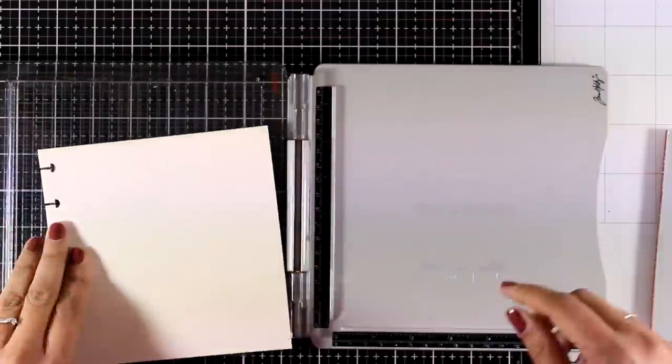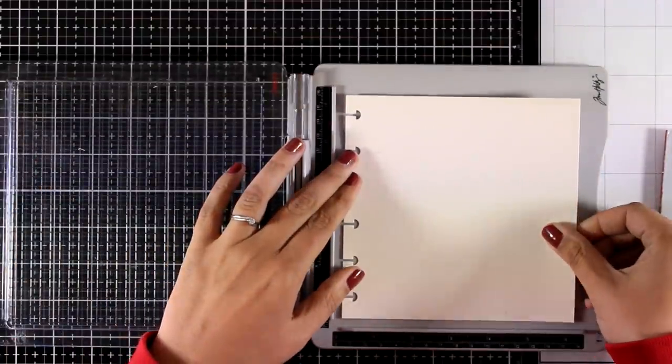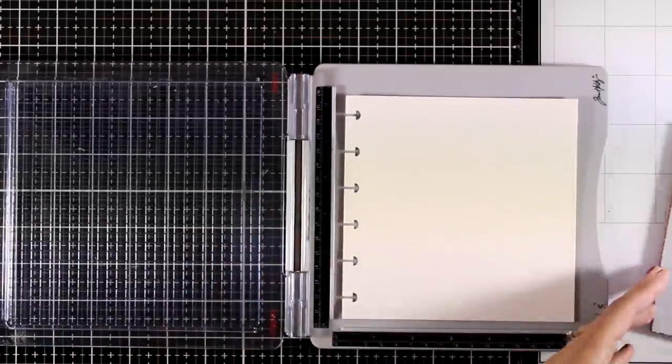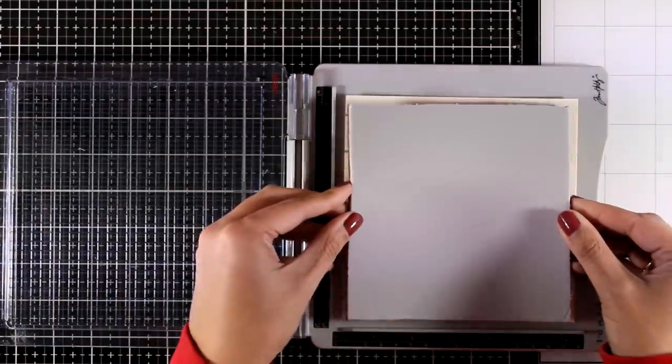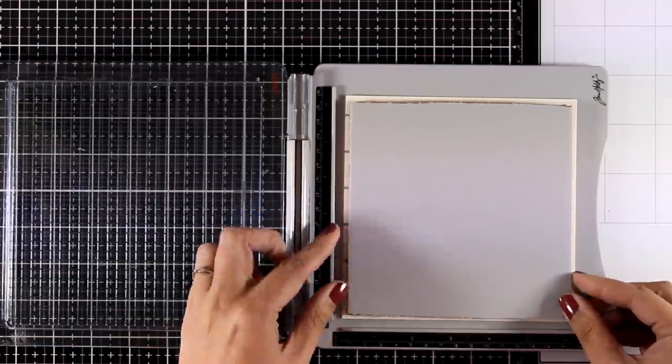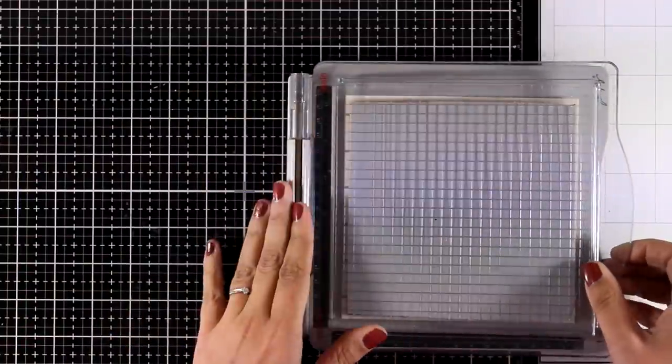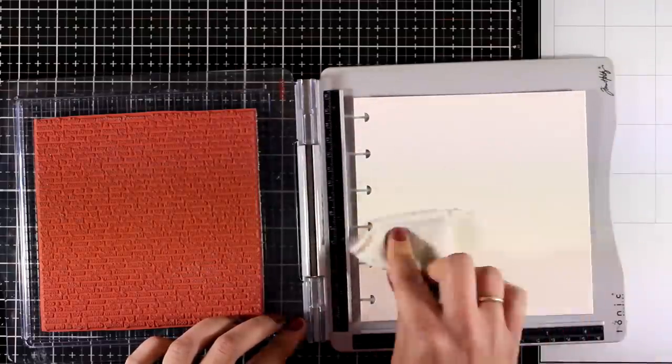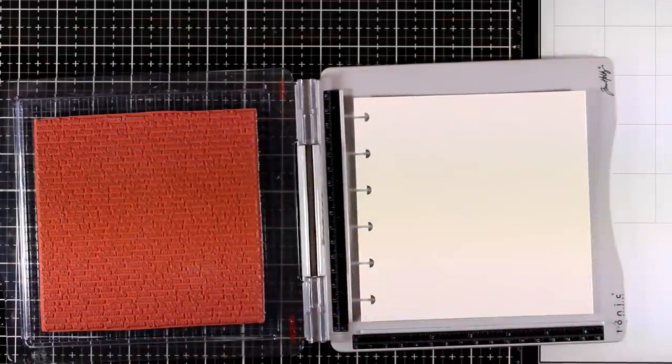As usual I'm going to create my background first so I will be using my stamping platform. I have applied some repositionable tape on the base of my stamping platform and then at the top I'm going to add this rubber stamp which is full of Christmas sayings. It is a stamp by My Favorite Things and I believe it is called Christmas Background.